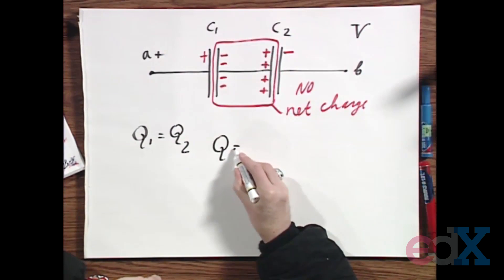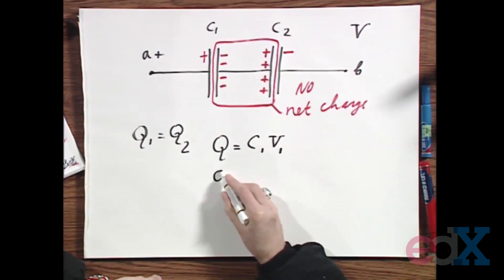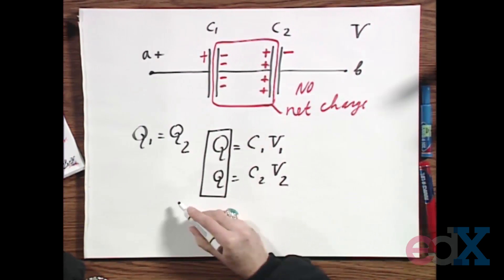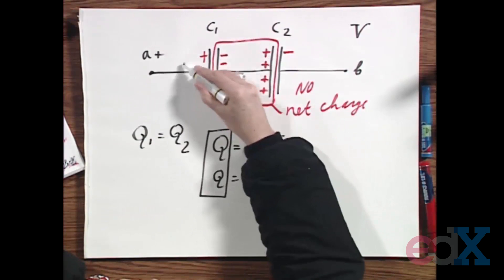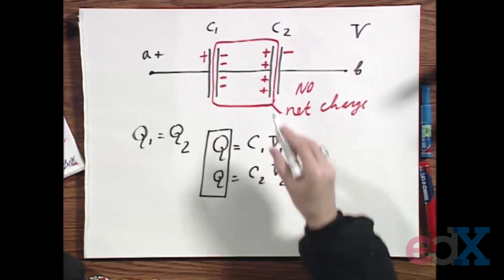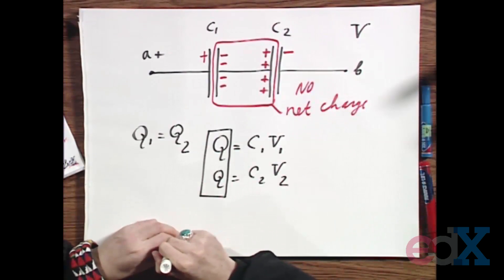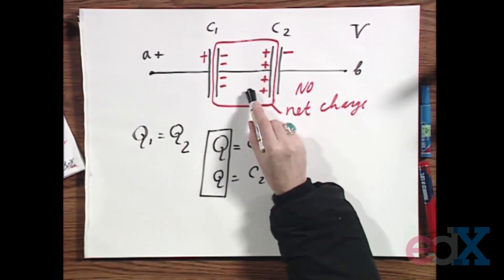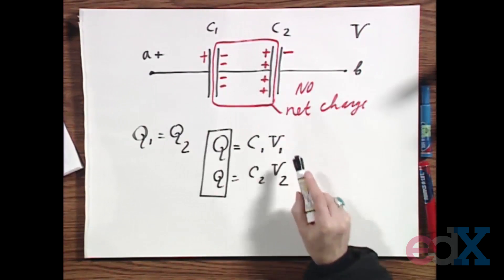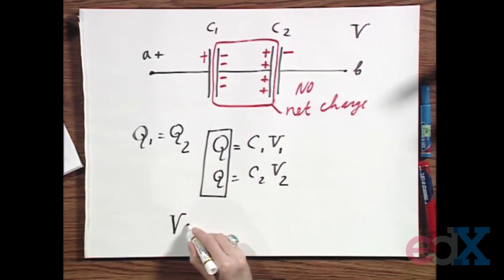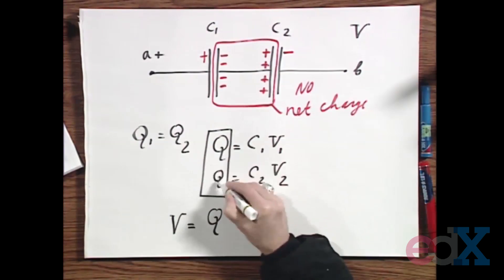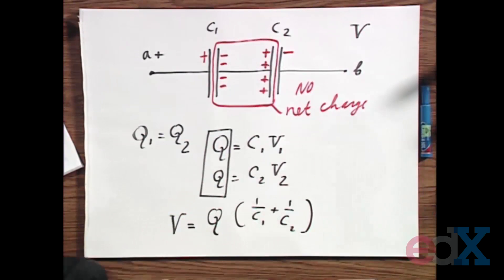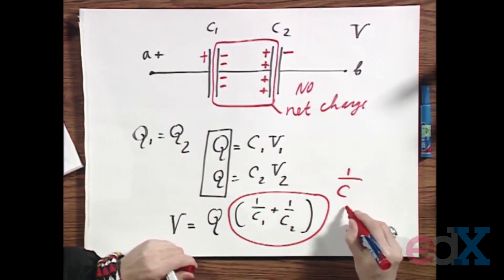So now we have Q equals C1 times V1, and Q equals C2 times V2, and these two Q's are the same. Since C1 is not the same as C2, the potential difference V1 over C1 will be different from V2 over C2. If you work this out, you can easily show that V equals Q times (1 over C1 plus 1 over C2), and this is often called 1 over C_equivalent.